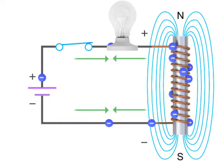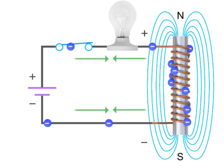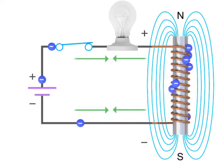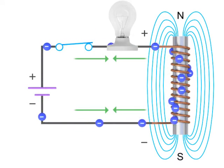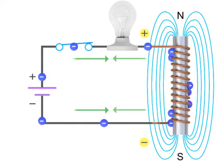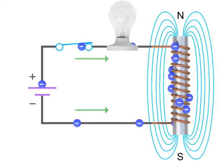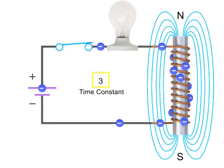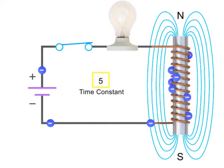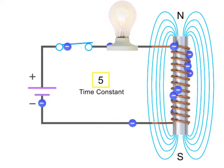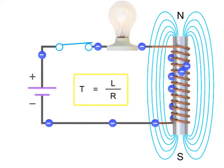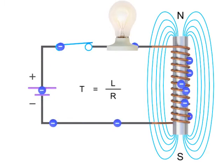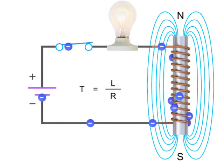However, once the electromagnetic field stops expanding based on the level of changing current, the flux will no longer generate an opposing voltage in the circuit. The current will continue to flow and reach its maximum value after 5 time constants, or 5T, where T is equal to L divided by R. The light bulb will then be at its maximum brightness.